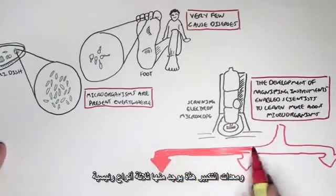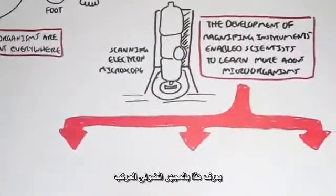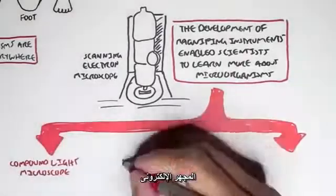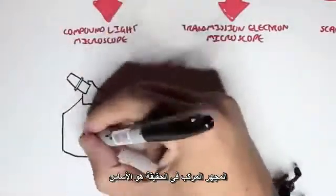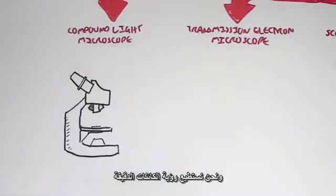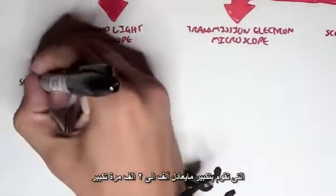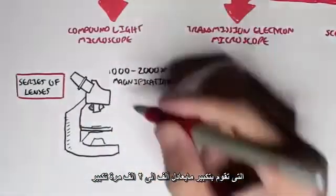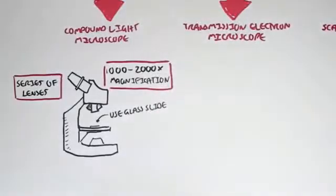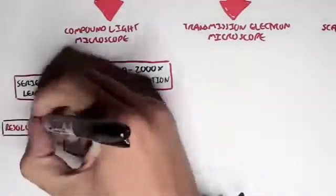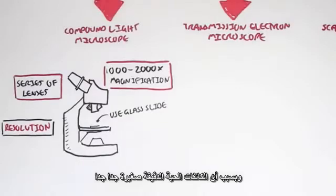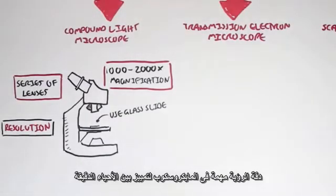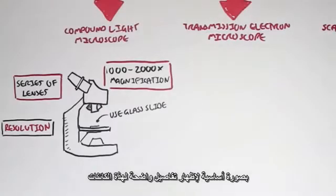There are three main magnifying instruments: the compound light microscope, the transmission electron microscope, and the scanning electron microscope. The compound light microscope is the basic one — we are able to see microorganisms through a series of lenses, and it can magnify about 1,000 to 2,000 times. We usually use a glass slide to view these microorganisms. An important concept is resolution — because microorganisms are very small, resolution is important to separate between two microorganisms and view fine detail.